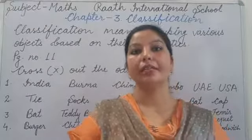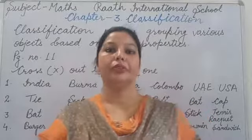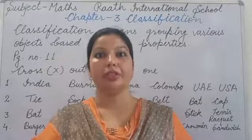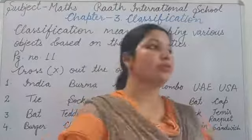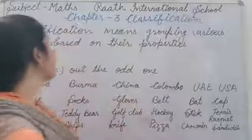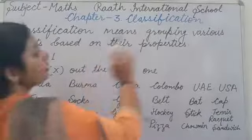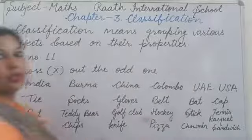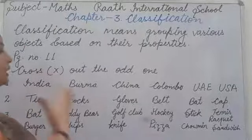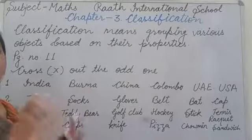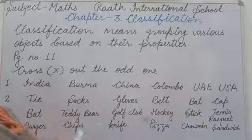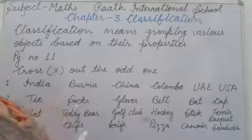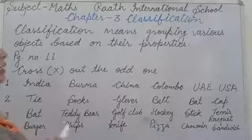Good morning students. Once again, welcome back to aptitude class. Today we will start Chapter 3, that is Classification. So first of all, the meaning of classification: classification means grouping various objects based on their properties. Different objects ka group banana according to their properties — according to their quality we make their group. That is called classification.